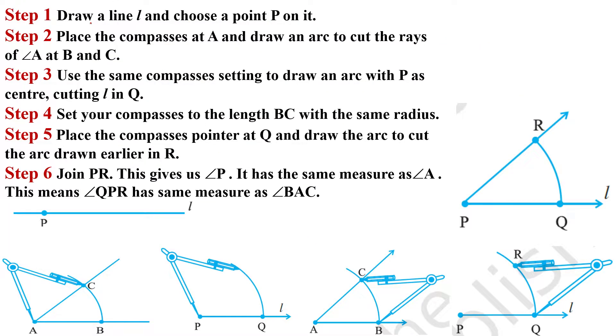First step is draw a line. First we draw a line L and choose a point P on this. Place the compass at A and draw an arc to cut the rays of angle A at B and C.